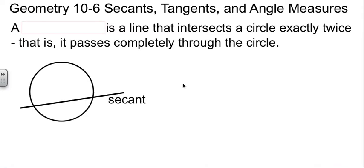This is Geometry, Chapter 10, Section 6, in which we will study secants, tangents, and how they relate to angle measures. We already talked about tangents last time, but we need to know what a secant line is.